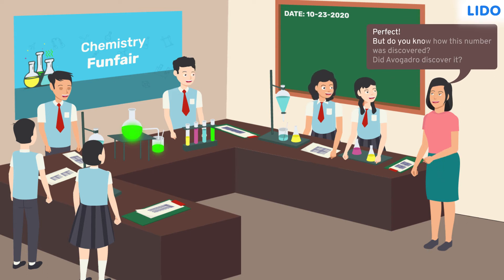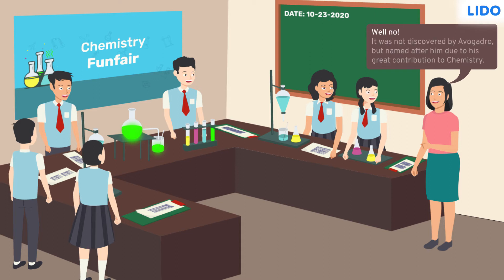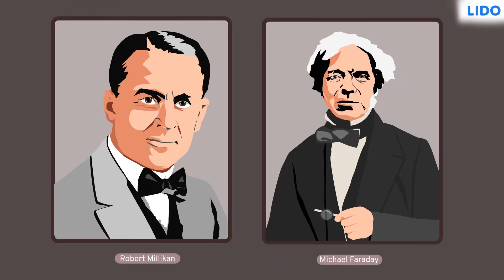'But do you know how this number was discovered? Did Avogadro discover it?' Rina ma'am continued, 'Well, no! It was not discovered by Avogadro, but named after him due to his great contribution to chemistry. Millikan and Faraday's experiments gave one of the most accurate numbers.'